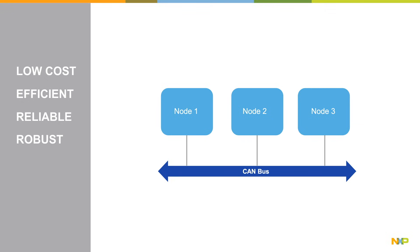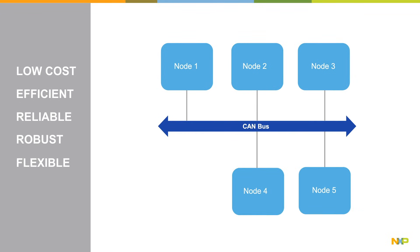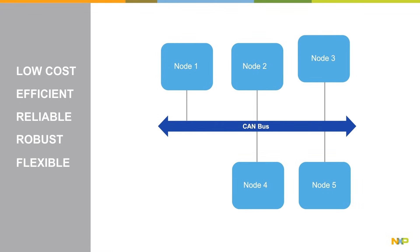Lastly, CAN is flexible. Because it is a message-based protocol, the nodes on the network contain no identifying information associated with them. This allows nodes to be added or removed from the system without any hardware or software modification to be done.